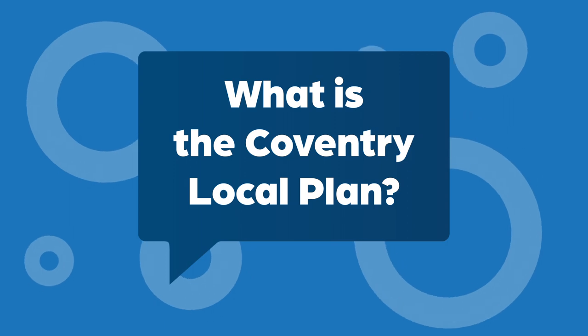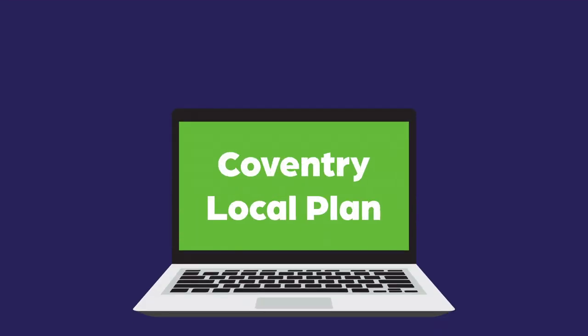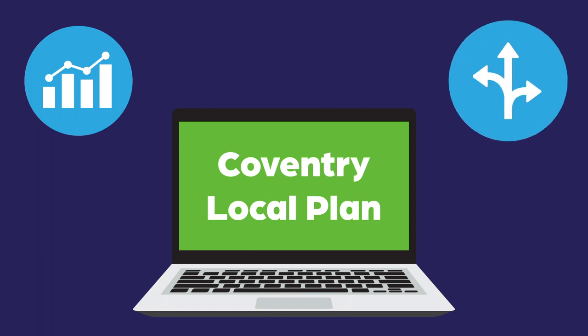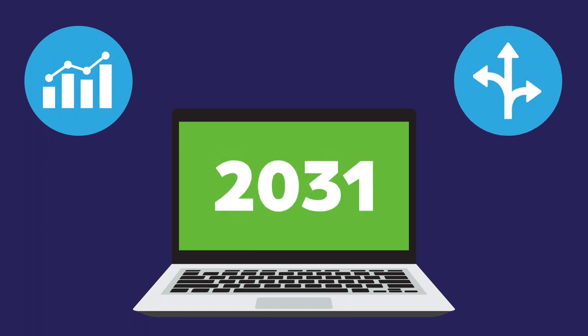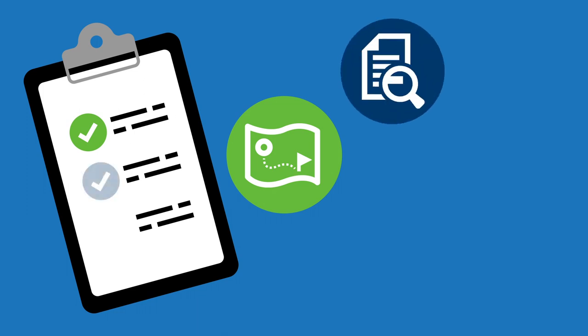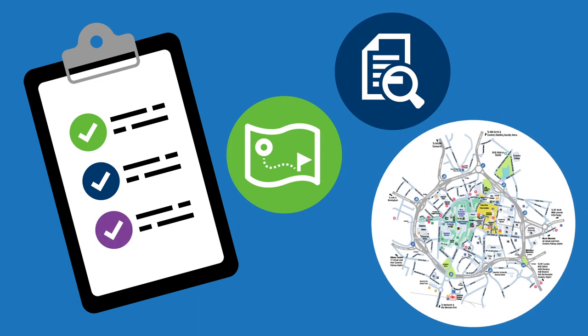What is the Coventry Local Plan? The Coventry Local Plan sets out how much and what kind of development is needed in Coventry up until 2031. It was adopted in December 2017. The plan considers where any development should go and what policies should be applied to help the Council decide whether planning applications are acceptable. An Area Action Plan for the City Centre was also produced at the same time.